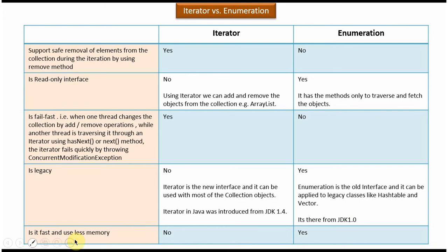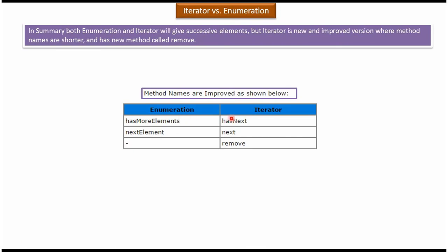Is it fast and uses less memory? In case of iterator, no. In case of enumeration, yes. Enumeration is the old interface and iterator is the new interface. Method names are improved in iterator, and it has one additional method called remove. And this is about the difference between the iterator and enumeration. Thanks for watching.